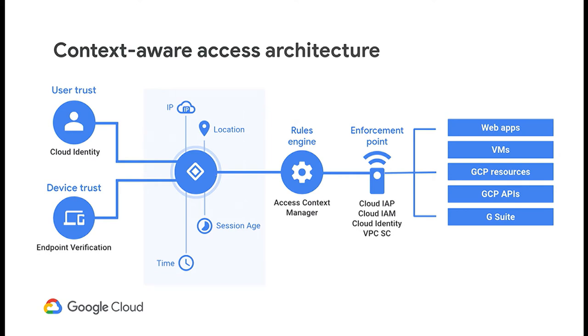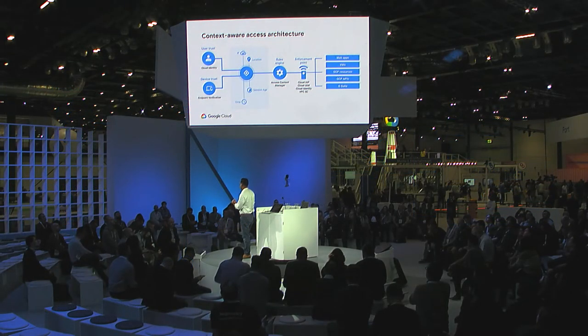We've talked about establishing user trust — knowing who the user is and verifying they are who they say they are. But looking at BeyondCorp holistically, instead of relying on your network perimeter, you're allowing access based on what you know about the user, the device, and the context they're in. We've built this as a platform feature: once you define your company's security posture, you can easily apply it to different endpoints — G Suite, GCP APIs, or applications behind your identity-based proxy, whether on GCP, other clouds, or on-prem.